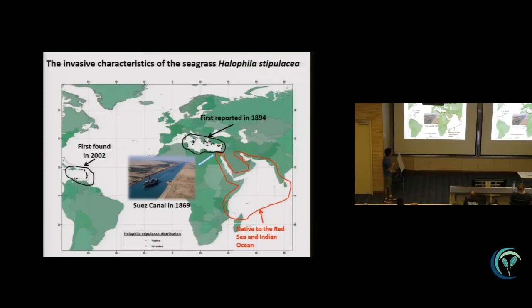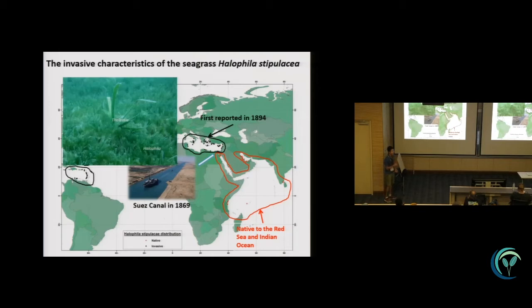There is a study from the Caribbean Sea showing that the Halophila is pushing out the local seagrass species by monopolizing the space, so there's no chance for the local species to recover after they were pushed away because of climate change.